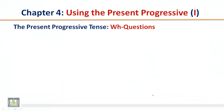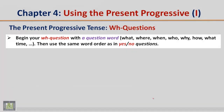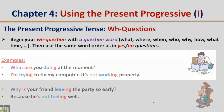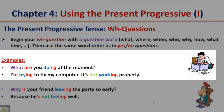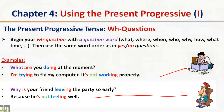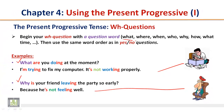The present progressive tense: WH questions. Begin your WH question with a question word — what, where, when, who, why, how, what time — then use the same order as in yes or no questions. Examples — What are you doing at the moment? Answer: I'm trying to fix my computer; it's not working properly. Why is your friend leaving the party so early? Answer: Because he's not feeling well. Notice the questions begin with a WH question word: what and why. For more examples, please see the top of the slide.